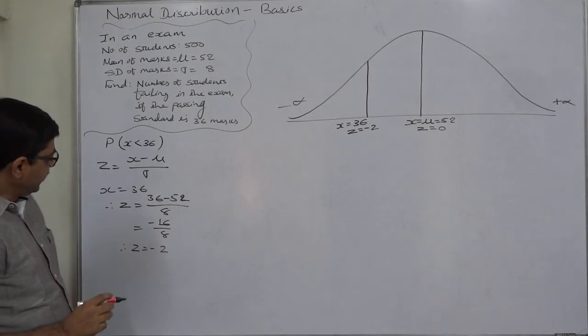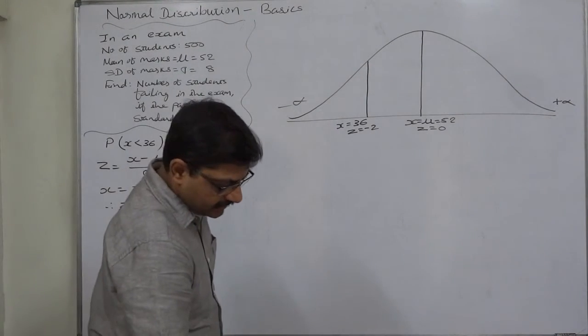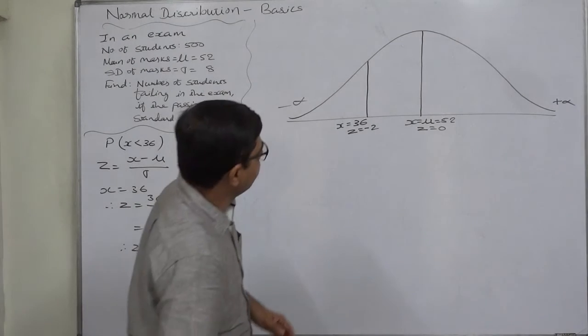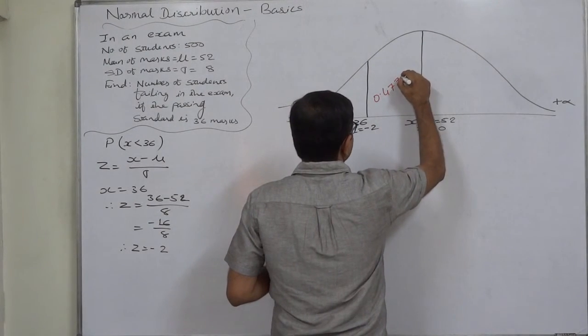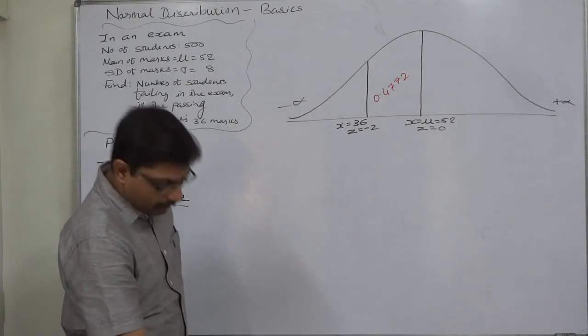For Z minus 2, the area in the table is 0.4772. That is the area between Z=0 and Z=-2.